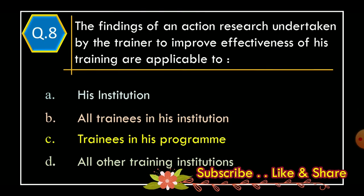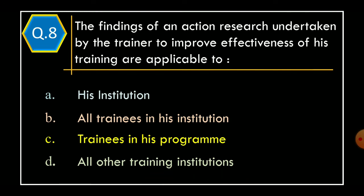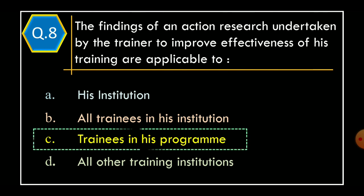Question 8: The findings of action research undertaken by the trainer to improve effectiveness of his training are applicable to. Option A: his institution. Option B: all trainees in his institution. Option C: trainees in his program. Option D: all other training institutions. And correct option is Option C: trainees in his program.